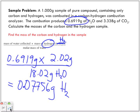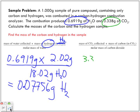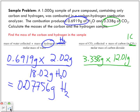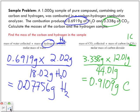Now we do the same for carbon. We take the mass of carbon dioxide collected, 3.338 grams, and multiply it by the mass of carbon in CO2, which is 12.01 grams — there is one carbon in CO2 — and divide by the molar mass of carbon dioxide, 44.01 g/mol. The calculation gives us 0.9109 grams of carbon in the sample.